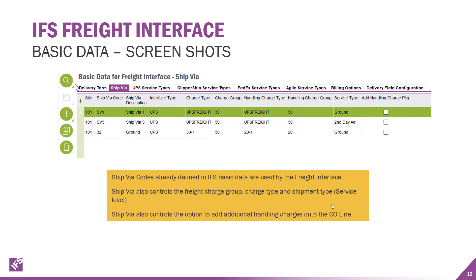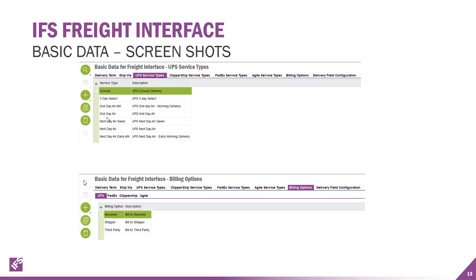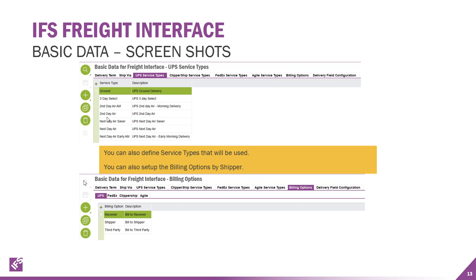There's some additional information on the ship via codes — they're already in the basic data but are used by the freight interface. You get the interface type; for example, we've got it set up for ship via one defined for UPS. You can define the charge types so you can track those and run reports and analysis on the freight information, and whether or not you want to add the handling charge for packages. There are also ship service UPS service types, and if you're using Clipper Ship, FedEx, or Agile, you can set up their service types for each of them.